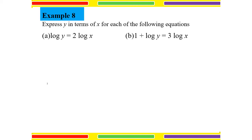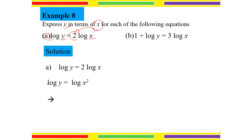Express Y in terms of X for each of the following equations — we want Y as the subject with X on the right side. For question A: log Y equals 2 log X. The coefficient of log on the right is not 1, so bring 2 as the power of X. We get log Y equals log X squared. Comparing inside the logs: Y equals X squared.